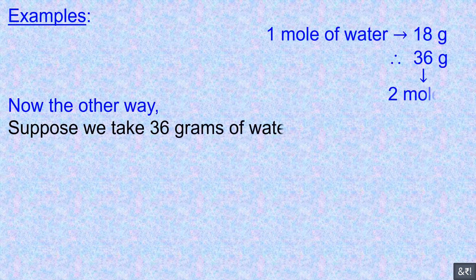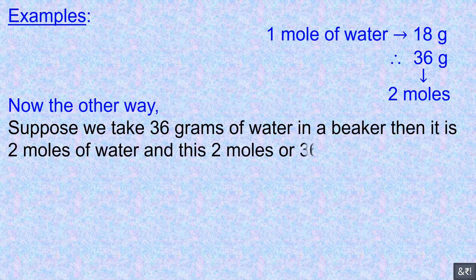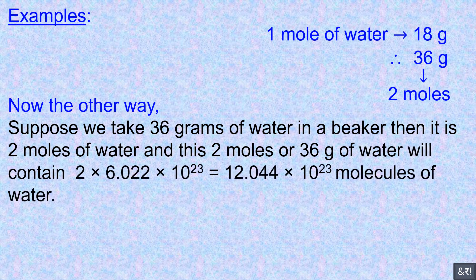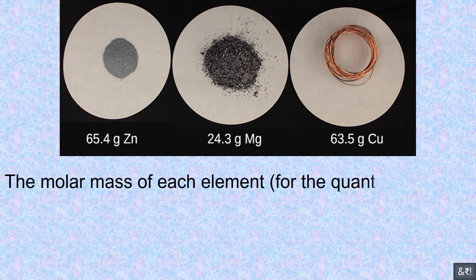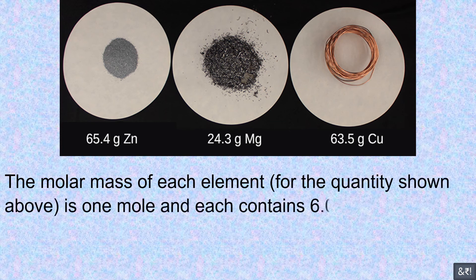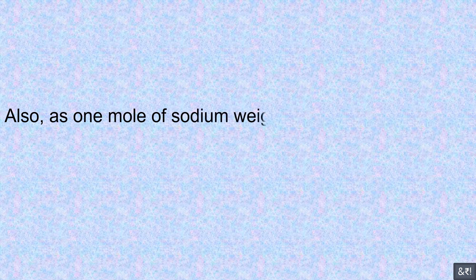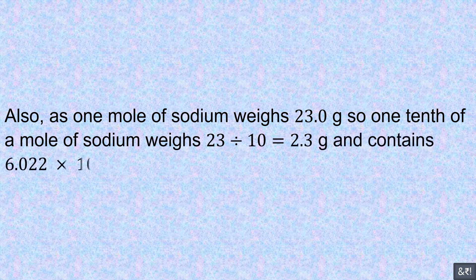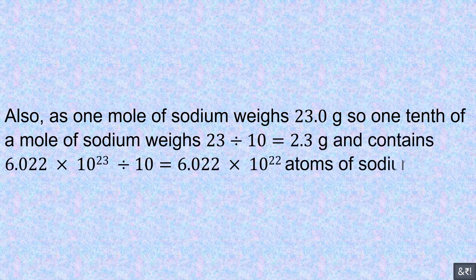Suppose we take 36 grams of water in a beaker, then it is 2 moles of water, and this 2 moles or 36 grams of water will contain 2 × 6.022 × 10²³ = 12.044 × 10²³ molecules of water. Also, as one mole of sodium weighs 23.0 grams, one tenth of a mole of sodium weighs 23 ÷ 10 = 2.3 grams, and contains 6.022 × 10²² atoms of sodium.